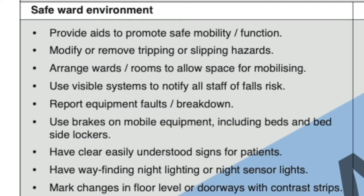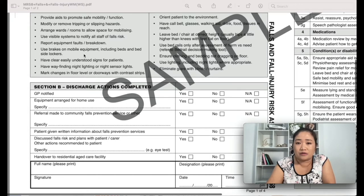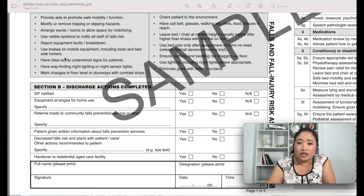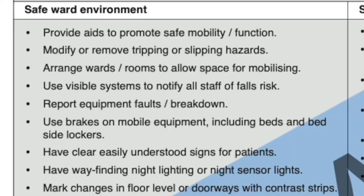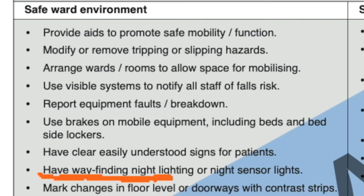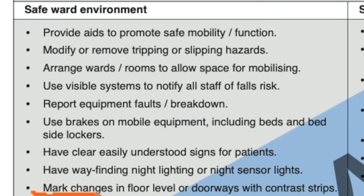Always check that bed brakes are on — if they're not and the patient tries to get out of bed, they could slip and fall. Have clear, easily understood signs for patients. Ensure wayfinding and night sensor lighting are in place. Make changes in floor level or doorways visible with contrast stripes.